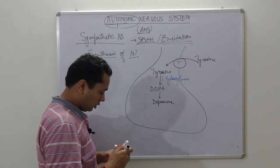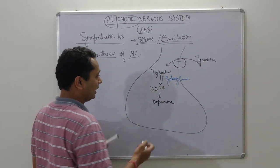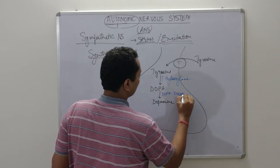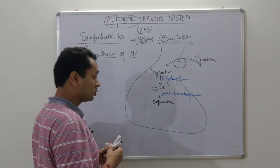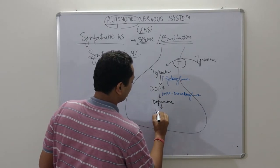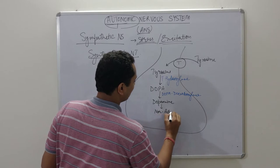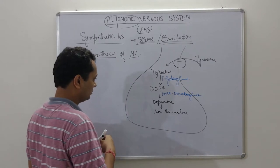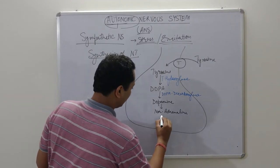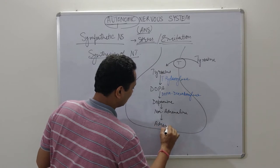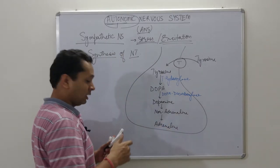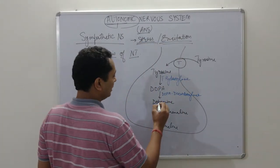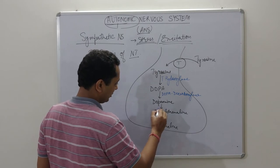This DOPA is then converted into dopamine — the enzyme responsible here is DOPA decarboxylase. Next, this dopamine will be converted into noradrenaline, and finally into adrenaline.